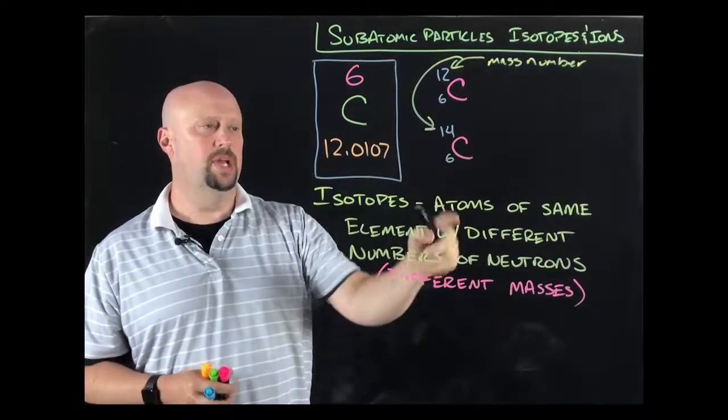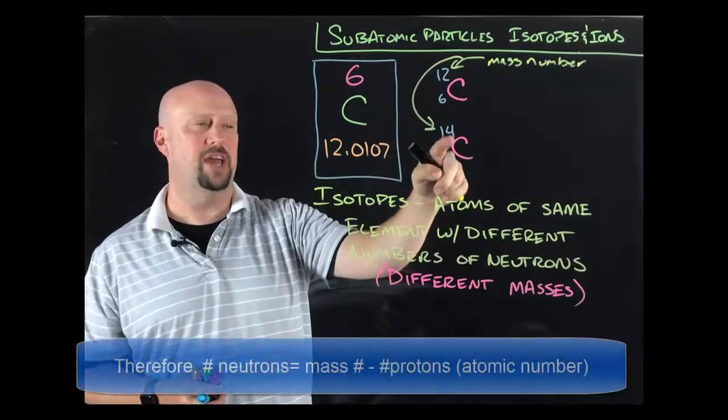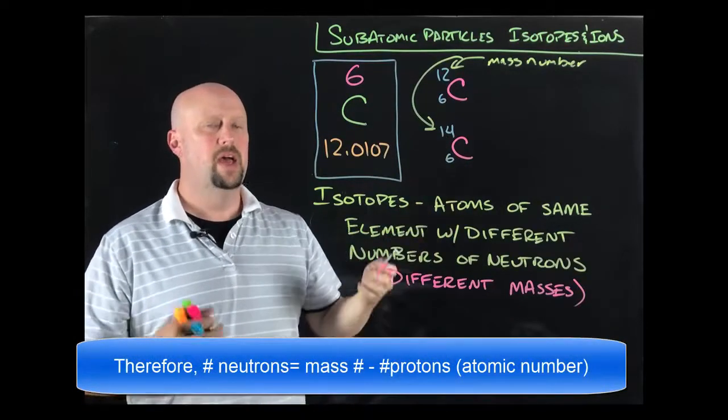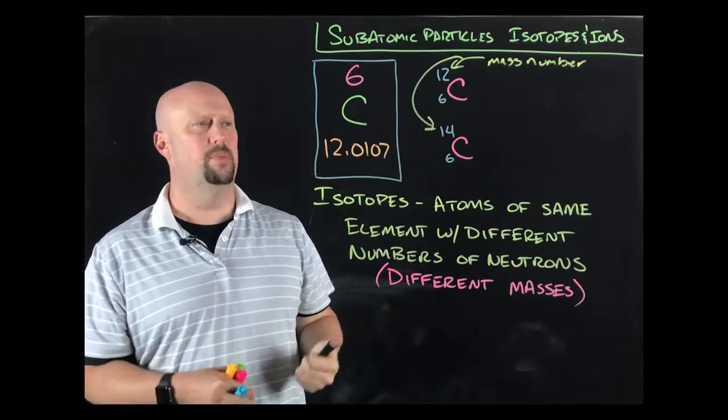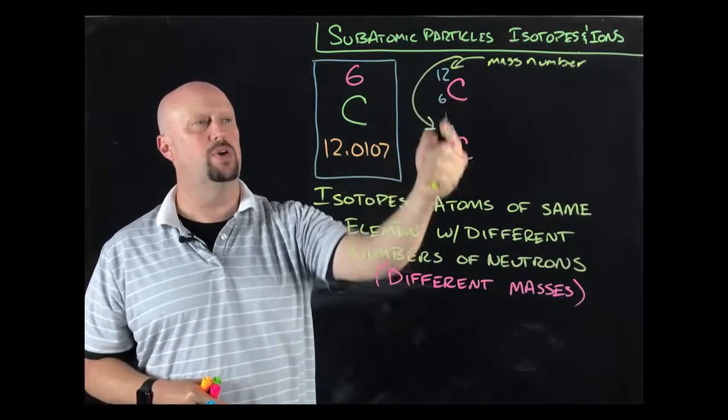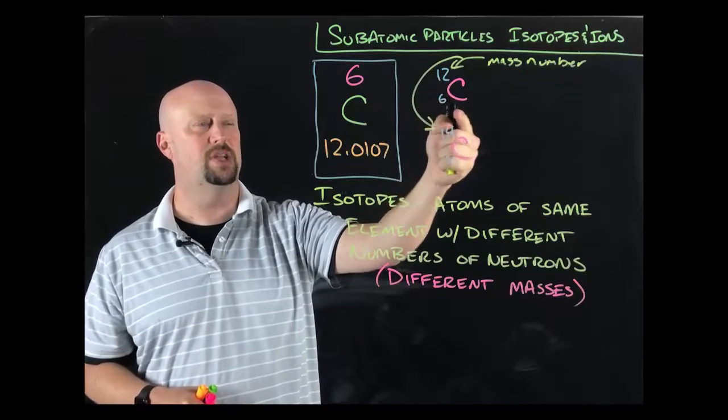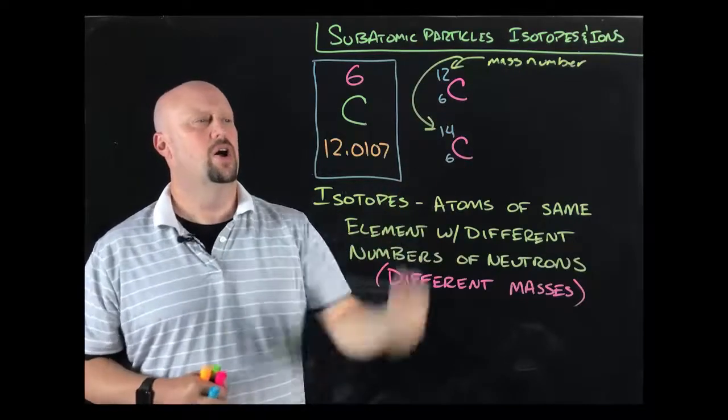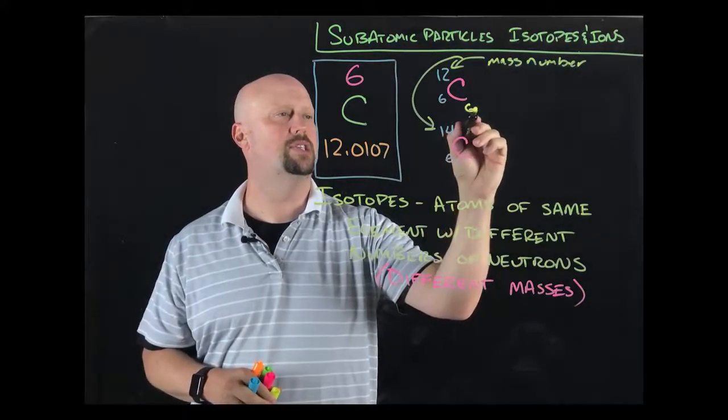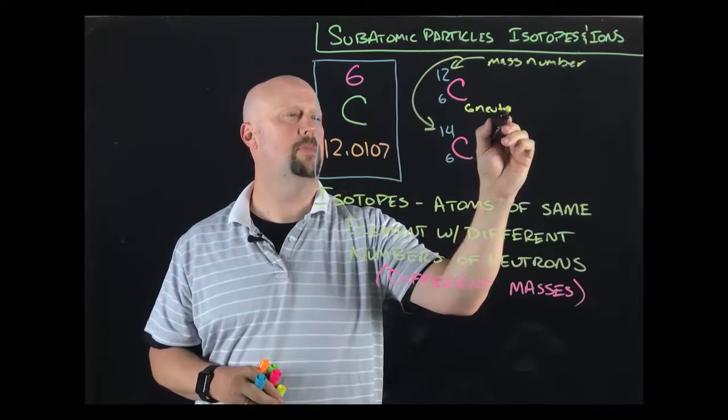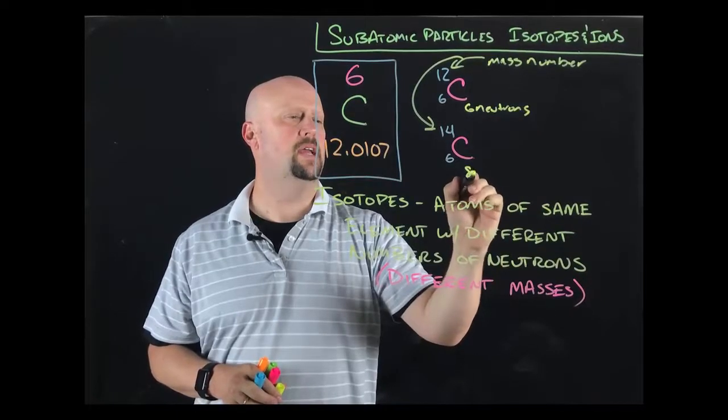For carbon-14, it's going to have eight neutrons because its mass number is 14. The easiest way is if you write these in isotope notation, if you need to know the number of neutrons real quick, you just do a quick subtraction. 12 minus six would give me six neutrons. 14 minus six would give me eight neutrons. So I'm going to write each of those up there real quick. So six neutrons and eight neutrons.